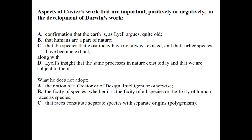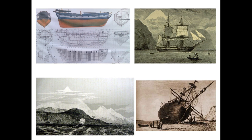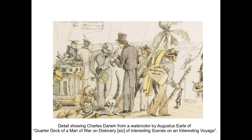Secondly, Darwin takes that humans are a part of nature. Third, that the species that exist today have not always existed, and that earlier species have become extinct — along with Lyell's insight that the same processes in nature exist today, uniformism, and that we ourselves are subject to them. What he does not adopt: the notion of a creator, or of a designer, or design — intelligent or otherwise. Second, the fixity of species, whether it is the fixity of all species or, more specifically, the fixity of human species, or human races as species. And third, that races constitute separate species with separate origins, or polygenism.